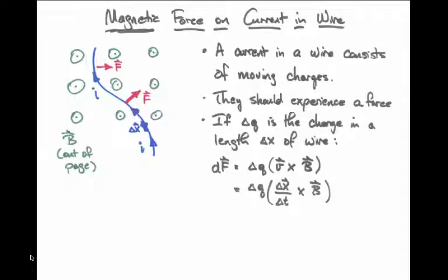A velocity is a delta x and a delta t. So we may write v as delta x divided by delta t. We can move the delta t underneath delta q, and we have a delta q divided by delta t times delta x cross b. Delta q over delta t, the amount of charge per unit time, is otherwise known as the current.